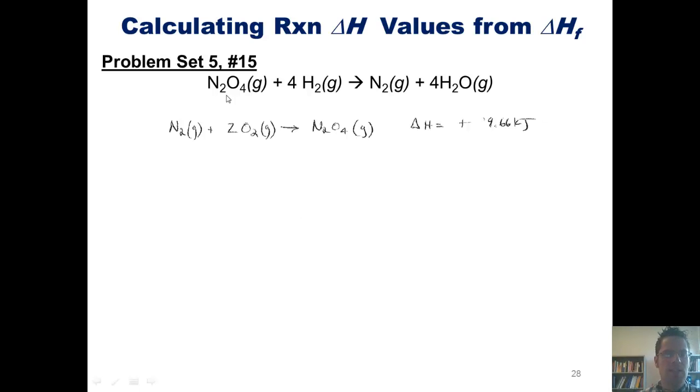One thing you'll notice, however, is that N2O4 in our target equation is on the left side of the equation. In the equation we looked up in Appendix C, it's on the right side of the equation. I have to reverse that. That's done as shown here, where I now have put N2O4 on the left side of the equation and its parent elements on the right side of the equation. The corresponding sign of the enthalpy value changes from positive to negative.